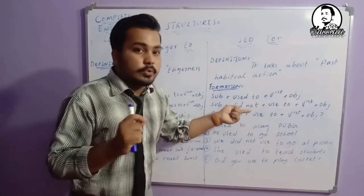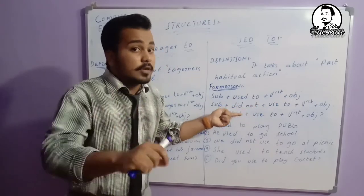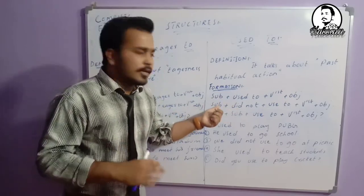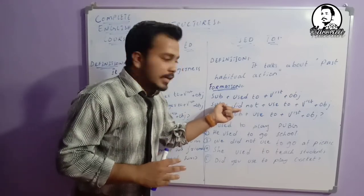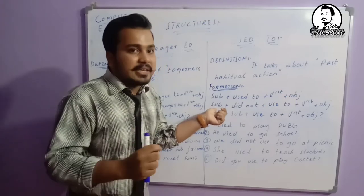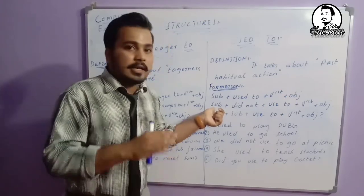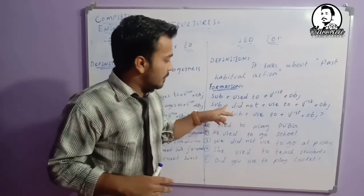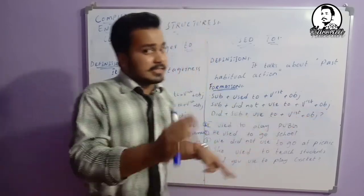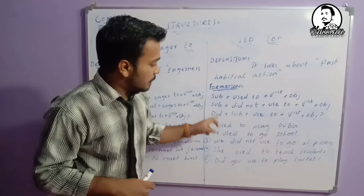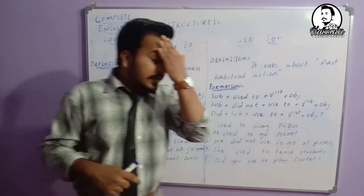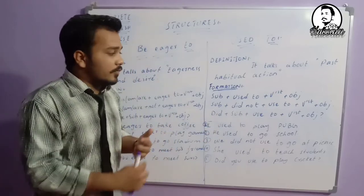In the negative, we use 'did' because we're talking about past. Whatever the subject — he, she, I, you — 'did' remains the same. For example: 'She did not used to play games' — woh nahi khela karti thi games. For interrogative: did plus subject plus used to plus first form plus object. So that is the interrogative formation for 'used to'.